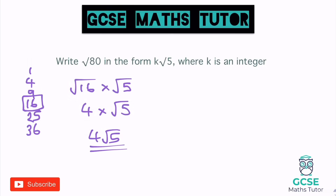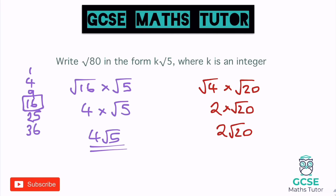It's important to note: if we had only spotted that 4 went in, we might have written the square root of 80 as the square root of 4 times the square root of 20, reaching 2 times the square root of 20. But root 20 is not as small as it can go, so this would be wrong and we'd have to continue simplifying. But 4 root 5 is our final answer.